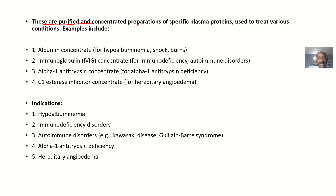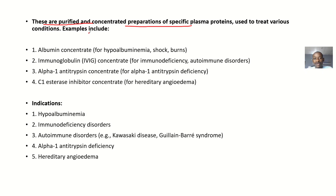These are purified and concentrated preparations of specific plasma proteins, and they are used to treat various conditions. Examples of concentrated plasma proteins include albumin concentrate. You use it to treat hypoalbuminemia — the patient has a low level of albumin. Instead of giving whole blood, you concentrate just albumin and give it to them.